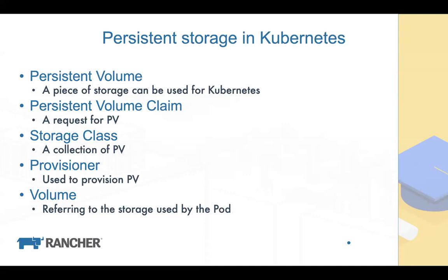The last concept you're likely to encounter is simply called 'Volume.' In Kubernetes, a volume refers to the storage used by a pod — it's not necessarily persistent. If the volume points to a PVC, it's most likely persistent storage. But if the volume uses something like hostPath or emptyDir, those are not treated as persistent.